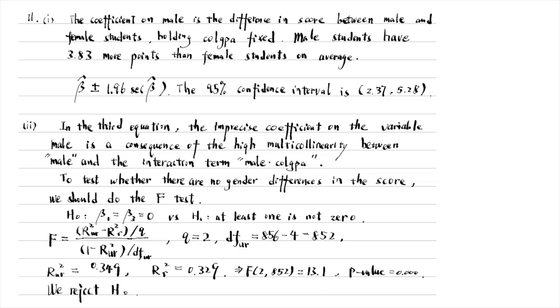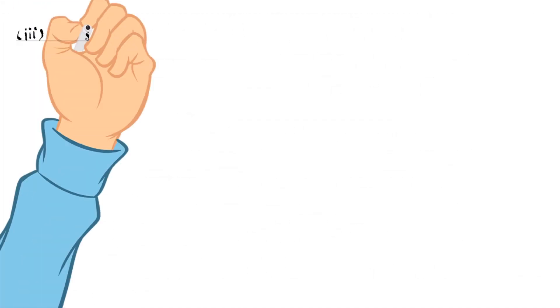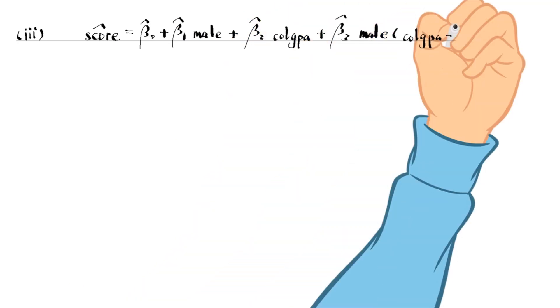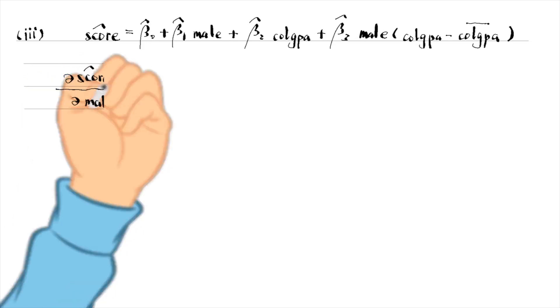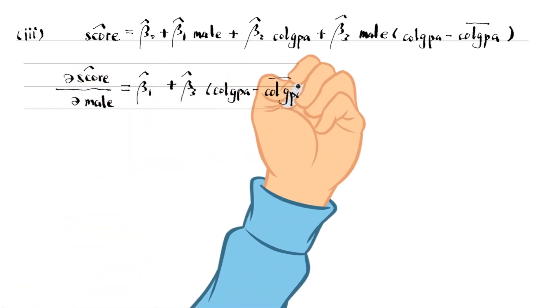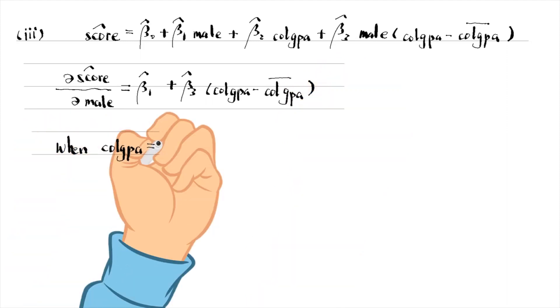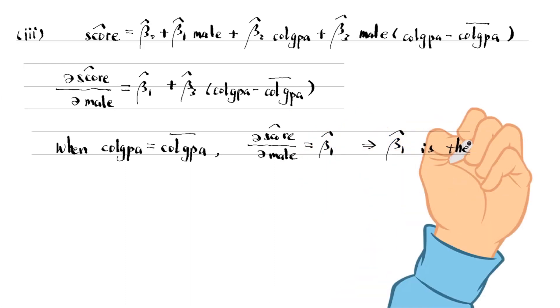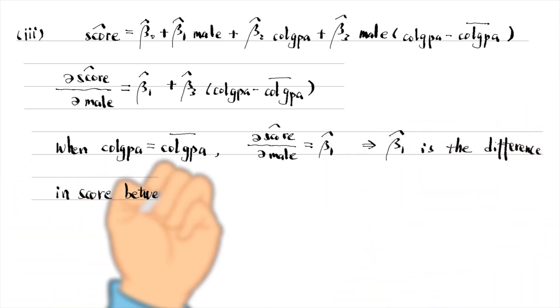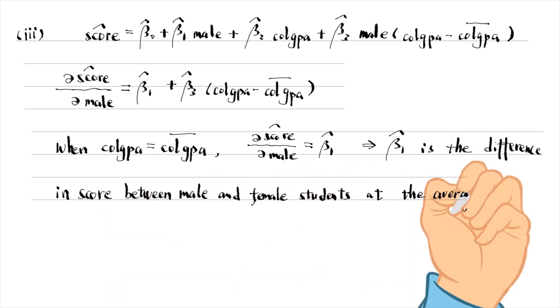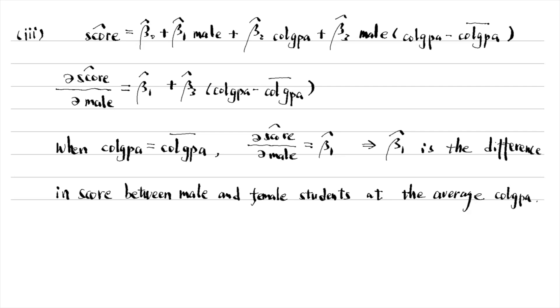For the last question, we can write the partial effect formula from the fourth equation, and find that beta 1 hat is the difference in the score between male and female students at the average college GPA. In other words, it is the partial effect at the mean, or an approximate average partial effect. At this point, the estimate and the standard error are close to equation 2. By contrast, in equation 3, the coefficient on male is the score difference at 0 college GPA. That is why the estimate is smaller in the third equation.